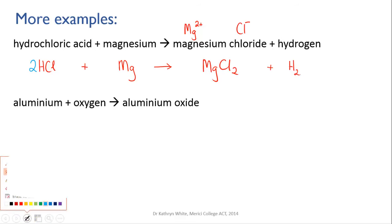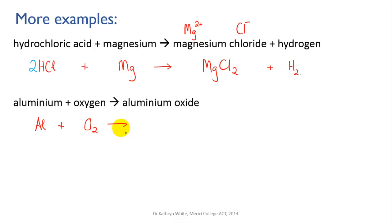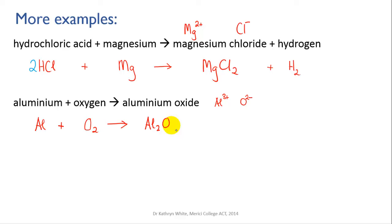Next: aluminium plus oxygen goes to aluminium oxide. Aluminium is Al; oxygen is one of the diatomic seven, so O2. Aluminium oxide is an ionic solid — metal and non-metal. Aluminium is in group 3, so Al³⁺. Oxide is oxygen in group 6 — it needs to gain two electrons to get a full octet, giving a charge of 2⁻. Doing the crossover gives Al2O3. On the left, we have one aluminium; on the right, we have two — so let's put a 2 in front of the aluminium.